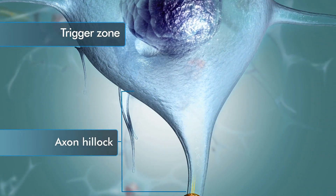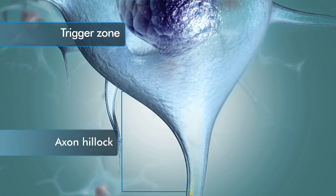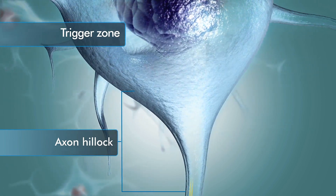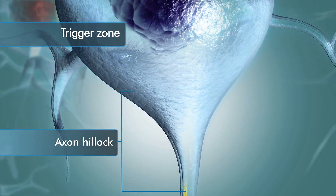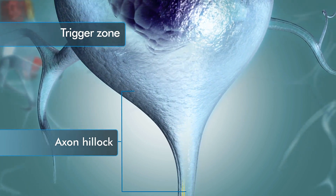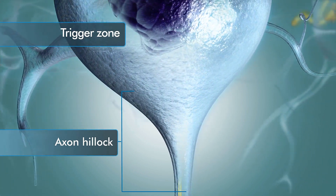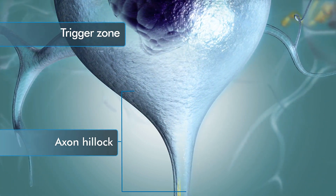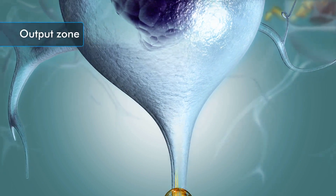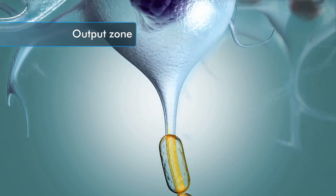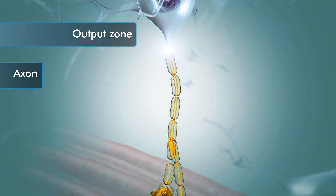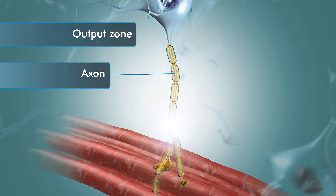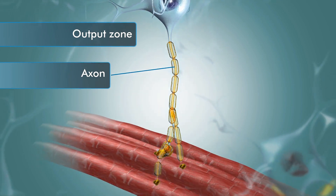The trigger zone is where voltage-gated channels are first encountered in the neuron. If the graded potentials reach threshold in the trigger zone, then an action potential is generated. The action potential is transmitted via voltage-gated channels down the axon to the output zone, where it causes skeletal muscle to contract.